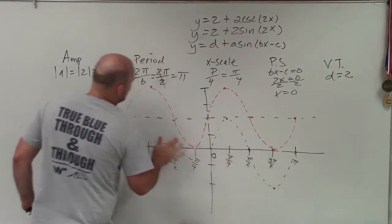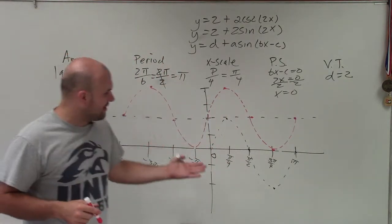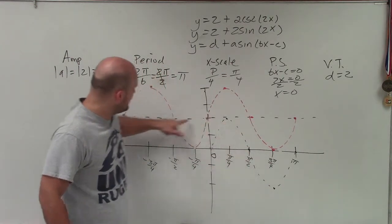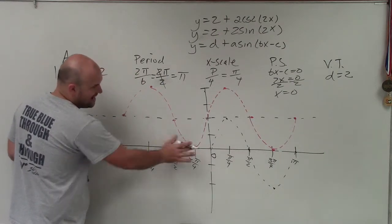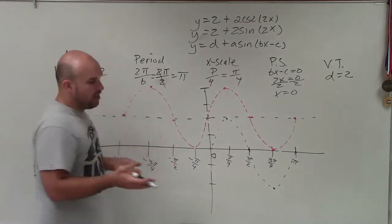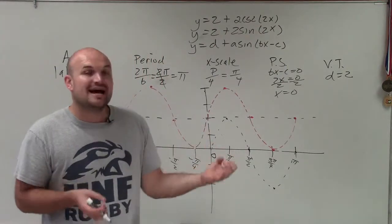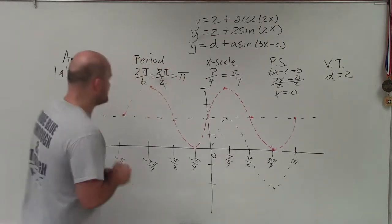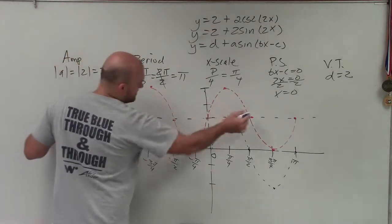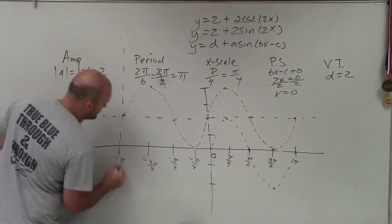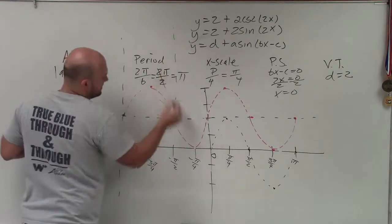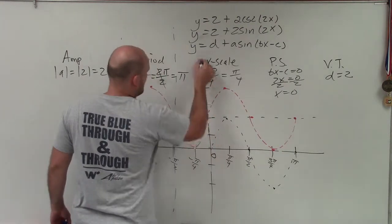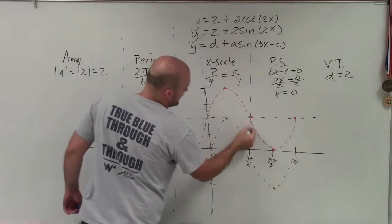The main important thing we need to understand about the reciprocal function is where the sine graph equals zero. Each and every one of these x-intercepts — if I shifted back down you could see each one is an x-intercept. At each one of those values, sine equals zero, so therefore it's undefined for cosecant. At each one of these x-intercepts, I'm now going to create an asymptote, because these values are undefined for my cosecant graph.